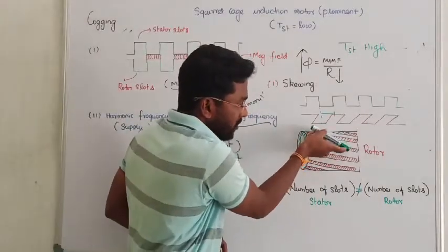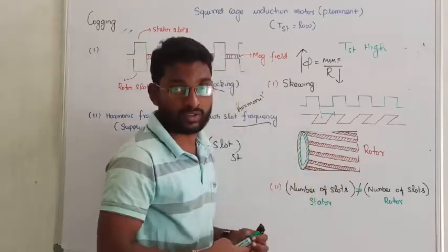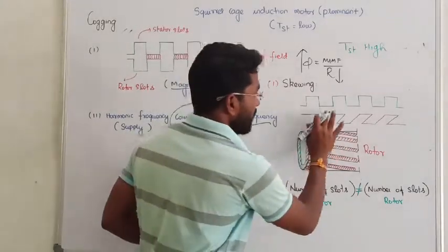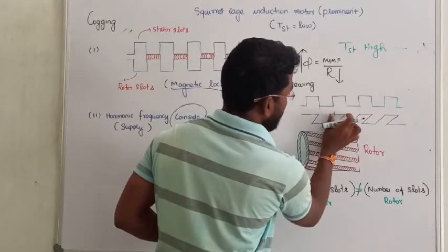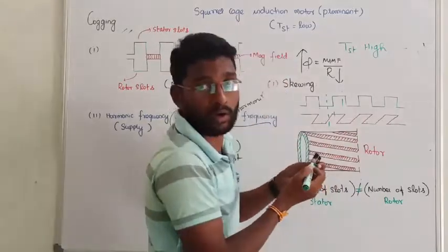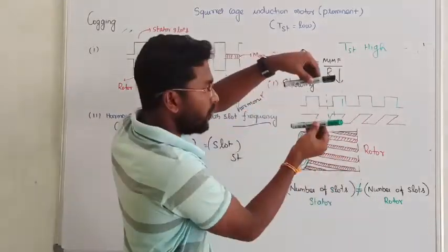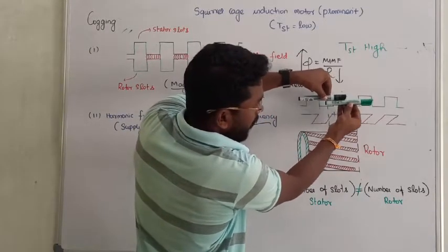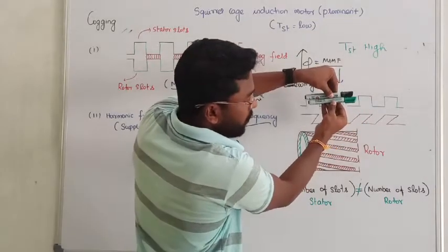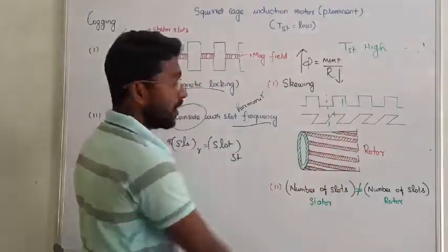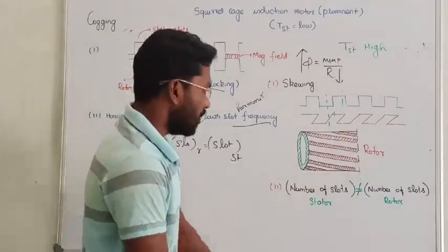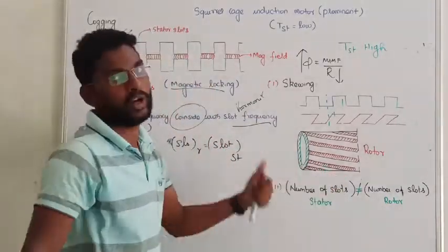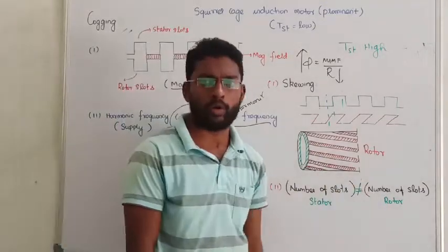That technique is called skewing. By skewing the rotor slots, we can avoid the slots facing each other directly, which eliminates magnetic locking. Another effective way to avoid magnetic locking is to make the number of rotor slots unequal to the number of stator slots — that is also one of the best methods to avoid cogging.